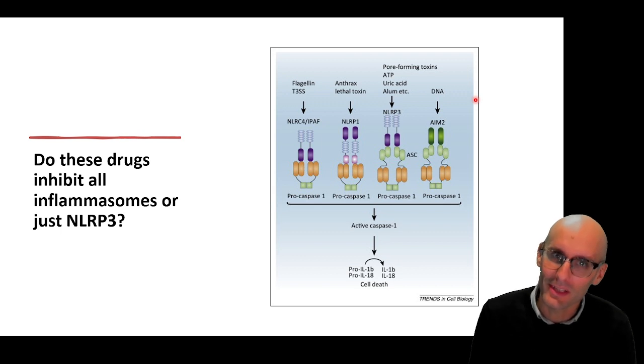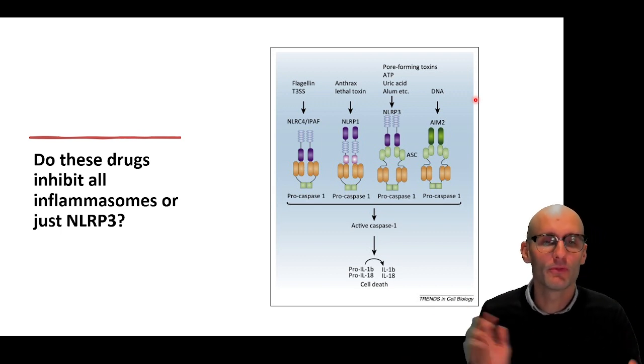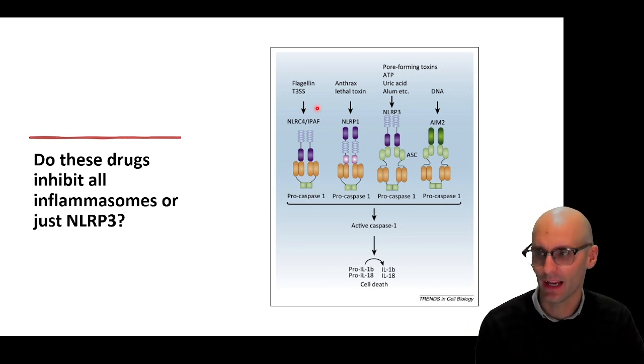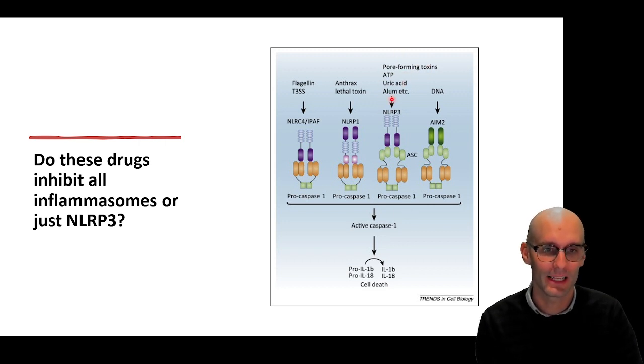But do they inhibit all inflammasomes? So there are actually multiple inflammasomes. I think there's up to 11 now. And here's just a few of the examples here. So here's our boy here, the NLRP3 inflammasome, and it's got all these activators here. Uric acid, alum is a thing that we put in vaccines, which does a very similar thing to uric acid and ATP and pore-forming toxins. They all activate the NLRP3.